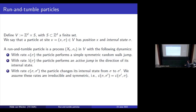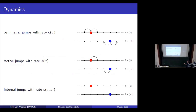Here are the dynamics in picture form. If D equals 1 and S equals {1, -1}, we have the symmetric random jumps. We also have the active jumps — if you're in the top layer it only goes to the right in active jumps, and if you're in the bottom layer it only goes to the left. And we can also change our layer. These are the dynamics in picture form.